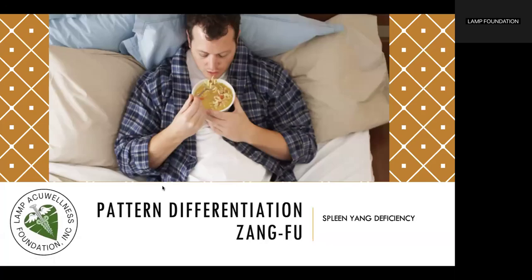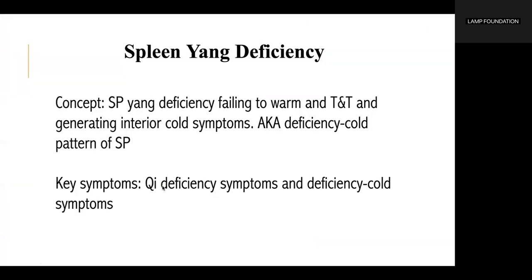Next, we talk about Spleen Yang Deficiency. Spleen Yang Deficiency is often a development of Spleen Chi Deficiency, but it can be the consequence of other imbalances. The symptoms and signs that define this pattern are very similar to those seen when there is Spleen Chi Deficiency. There will also be signs of deficient cold in this pattern, due to Spleen Yang Deficiency failing to warm, transport, and transform, generating interior cold symptoms. It is also called a Deficiency Cold Pattern of the Spleen.